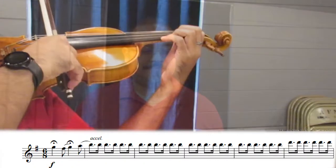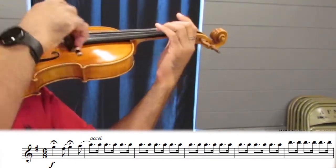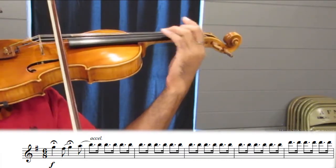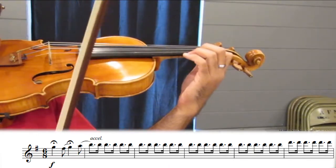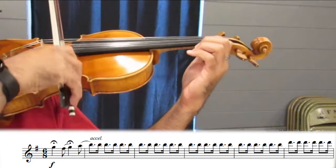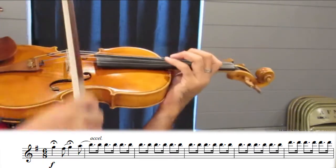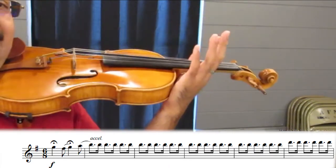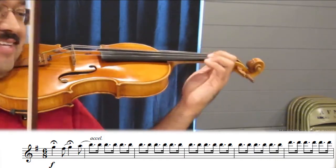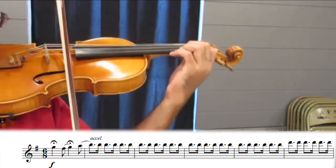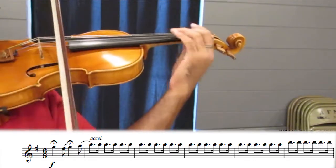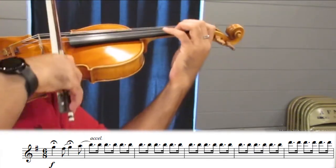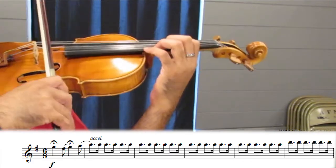Right from the beginning we're starting off forte. Start on the string and use all of your bow. If you start from the air you're not always gonna catch the string, you might get some sort of weird squeak. So if you start on the string 99% of the time you'll get a big sound. Try to connect the first few notes. We don't want to stop. Connect, hold the first B, not short.